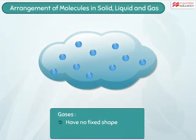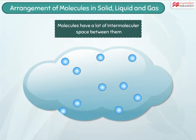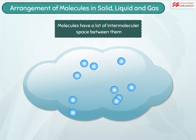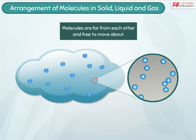A gaseous substance has no fixed shape, and the space occupied by it also changes depending upon the container in which it is put. There is a lot of intermolecular space between the molecules, and the molecules are far off from each other and free to move about in the available space.